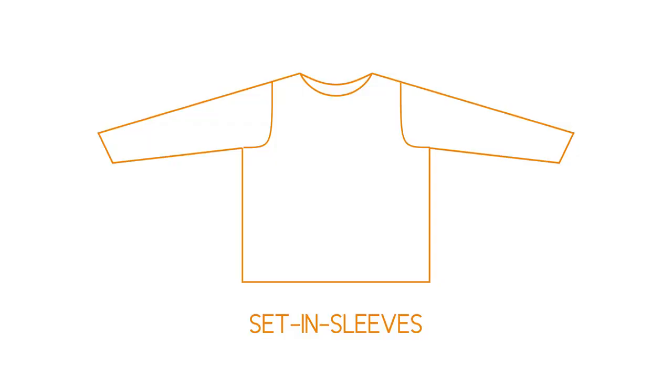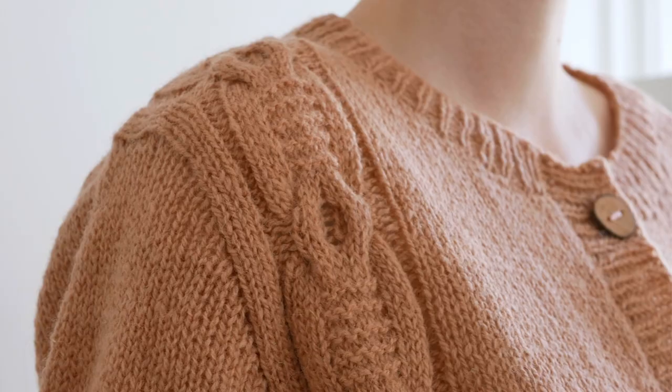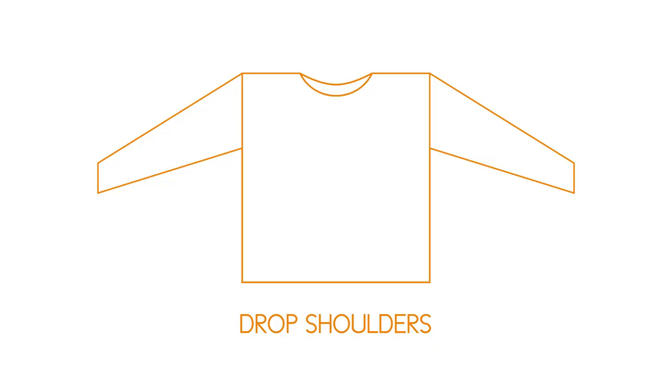Then there's the set-in sleeve, where you have a lot of shaping around the armhole and the shoulders. This one is usually for more fitted pullovers and sweaters, though you can find relaxed versions too. It has a beautiful fitted line around the shoulder and armhole, giving it a more tailored, fitted look overall.